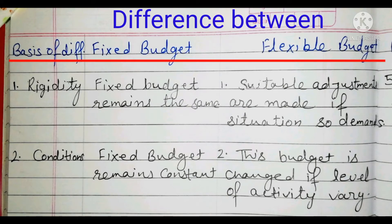The second point is condition. Under fixed budget, the budget remains constant — conditions may change, but the fixed budget remains constant. Whereas under flexible budget, the budget is changed if the level of activity varies. We can change it if our level of activity changes.